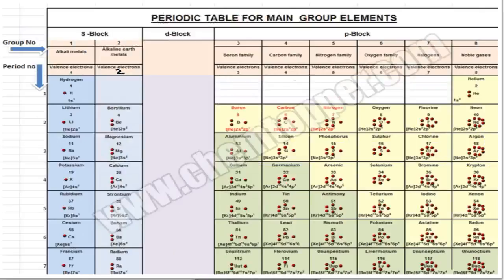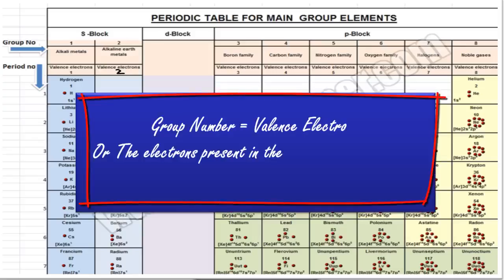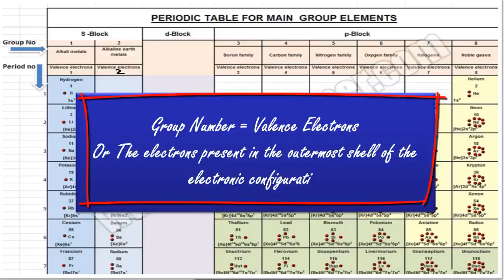Valence electrons are very important for making correct Lewis dot symbols. In my previous lectures, I have already explained how to predict valence electrons. Valence electrons can be predicted with the help of group number, or these are the electrons which are present in the outermost shell of the electronic configuration of an atom. If you know how to write the electronic configuration of an atom, you can easily predict valence electrons, or you can take help of the periodic table.